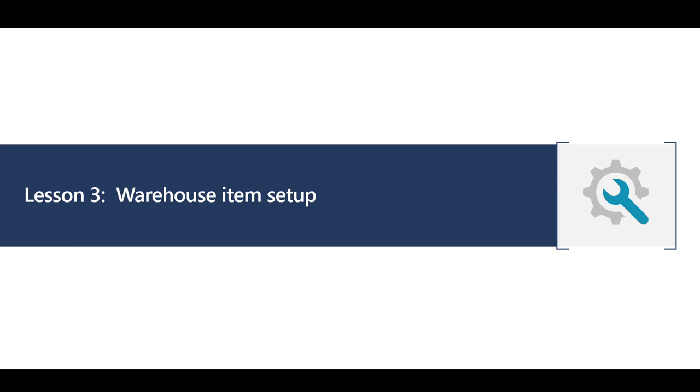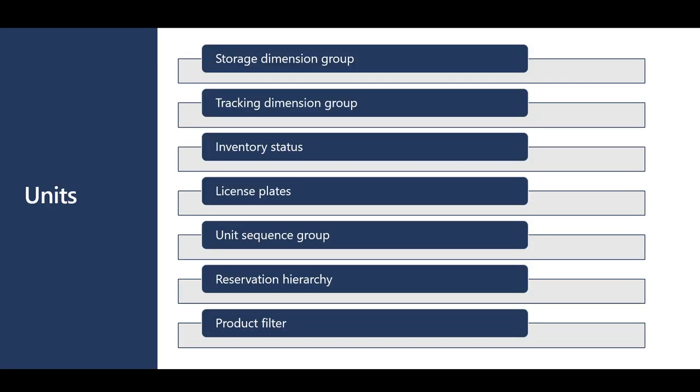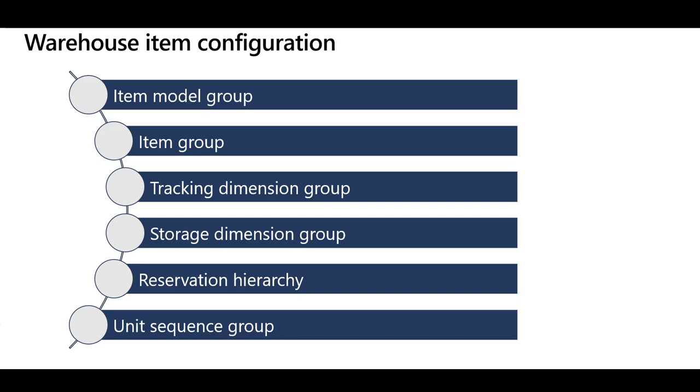Hello and welcome to Lesson 3 in the Warehouse Management Configuration Course, Warehouse Item Setup. In this lesson, we're going to review the common item references like the Storage Dimension Group, Tracking Dimension Group, and then we'll review the new concepts in the Warehouse Management Module like the Inventory Status, License Plates, Unit Sequence Group, Reservation Hierarchy, and the Product Filters. Configuring the Advanced Warehouse Management Item is not that different compared to the normal inventory items, except for some new options.